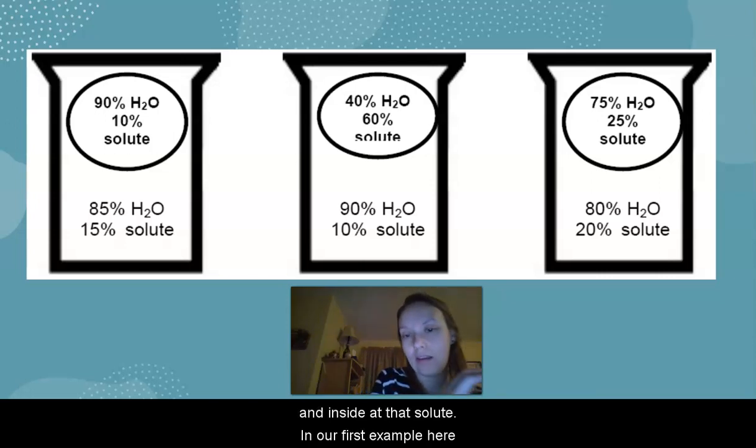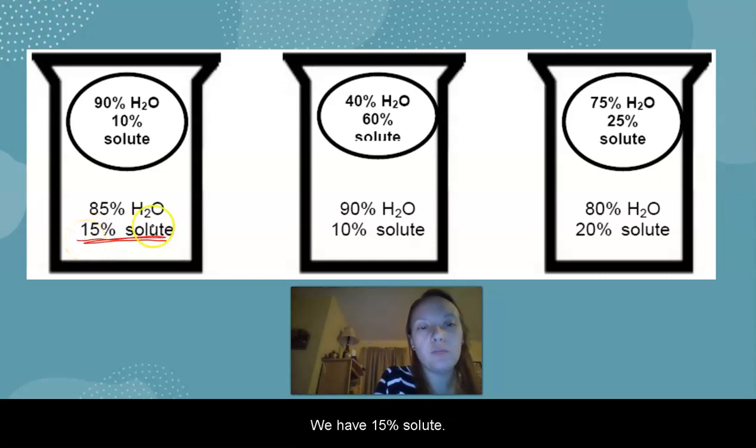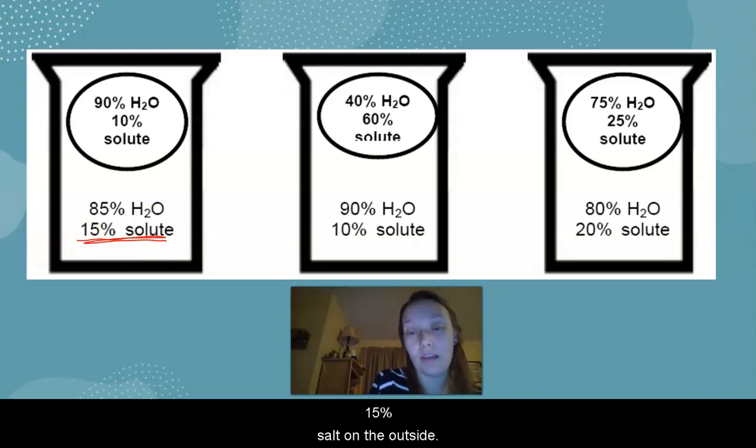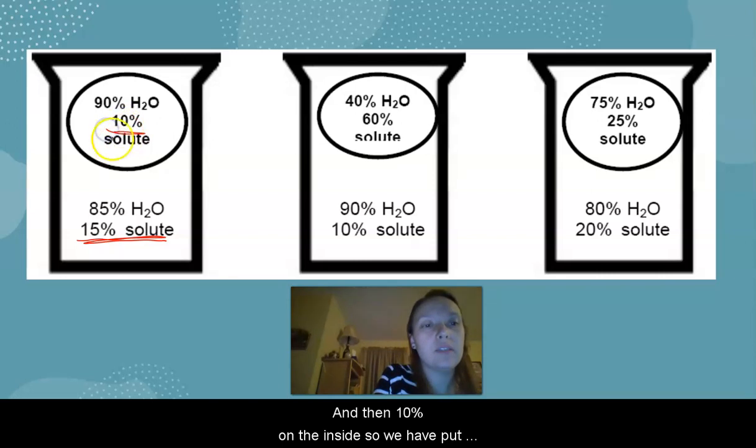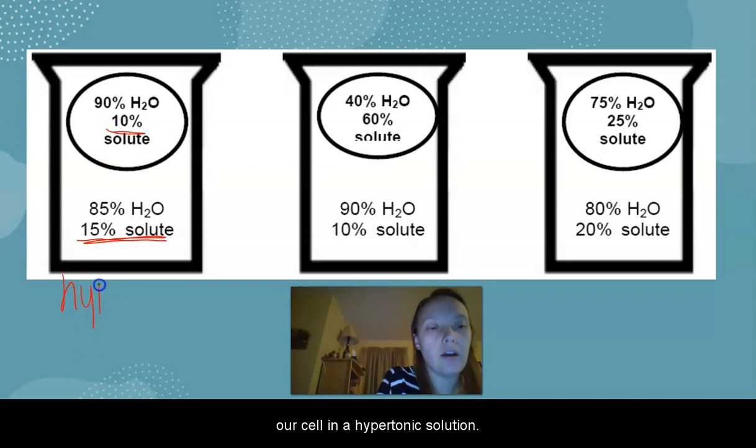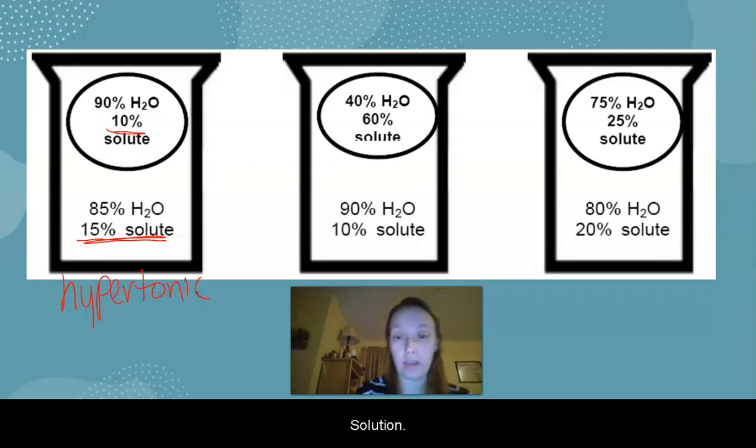So in our first example here, we have 15% solute, whatever it is, salt, who knows, 15% salt on the outside, and then 10% on the inside. So we have put our cell in a hypertonic solution because it's higher on the outside.